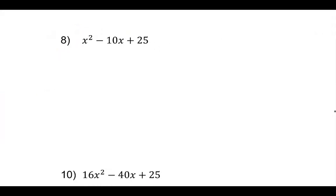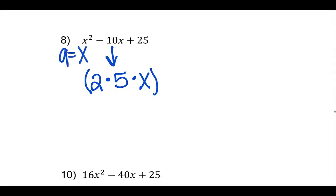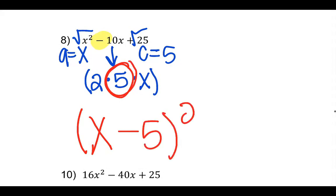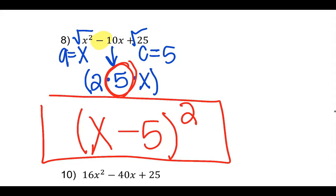So you're seeing the middle term — 2 times what — is going to be the number that goes here. Then it's just your variable, and the plus or minus depends on what sign is there. If we look at the next one, 2 times 5 times x. I know my a term is x and my c term is 5. Take the square root. I know it's subtraction because of the sign right here. So the answer is x minus 5 squared.